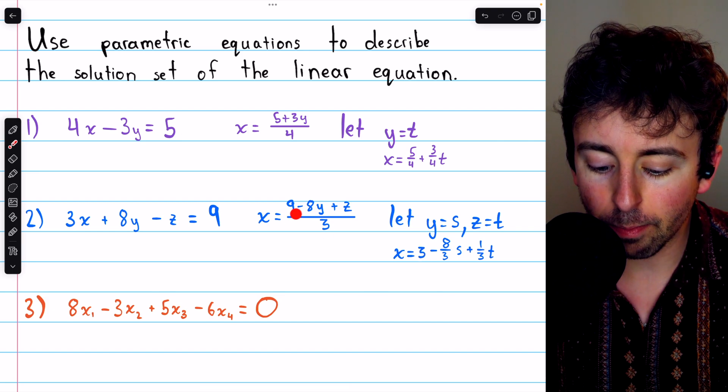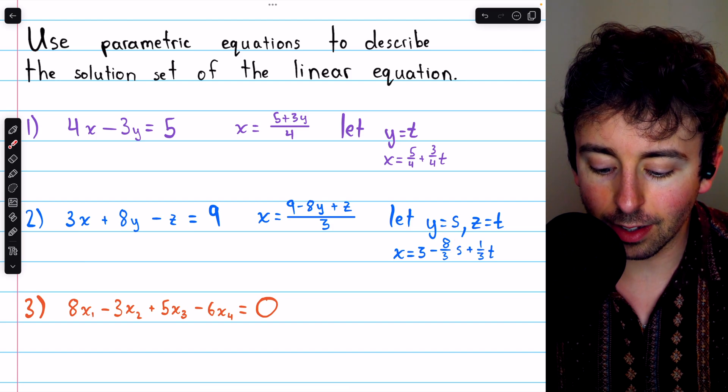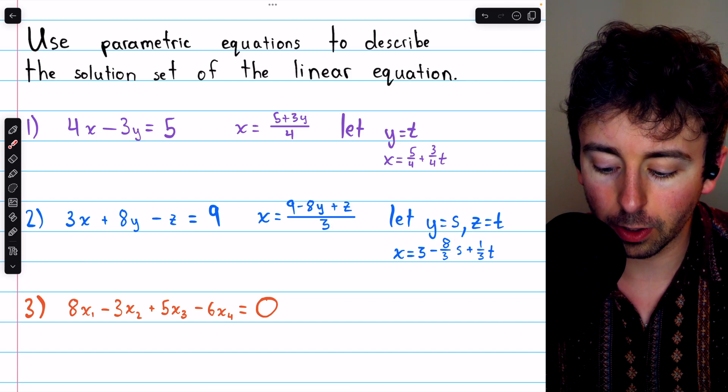Then these are the parametric equations that describe the solutions to this linear equation. Just separating this fraction, 9 over 3 is 3, minus 8 over 3y is minus 8 over 3s, and z over 3 is 1 third t.